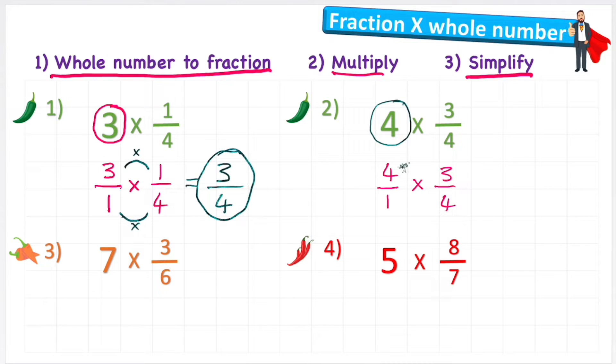And stage 2 says to multiply. So again I'm going to multiply my numerators. 4 times 3 is 12 and 1 times 4 is 4.